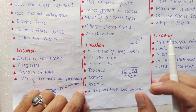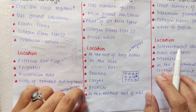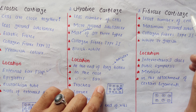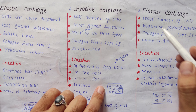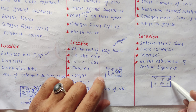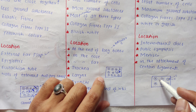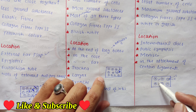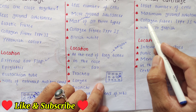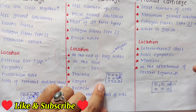تیسرا type fibrous cartilage ہے۔ As compared to hyaline cartilage اور elastic cartilage، اس میں least number of cells ہیں۔ اس کے اندر chondrocytes lacunae میں ہیں، اور extracellular space بہت زیادہ ہے۔ اس کا مطلب ہے اس میں ground substances بھی بہت زیادہ ہیں۔ Ground substance میں collagen fiber type 2 اور type 1 دونوں پائے جاتے ہیں۔